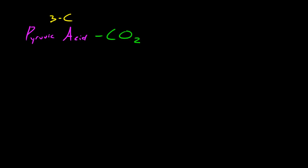Whenever that happens we end up with a two-carbon molecule, and this two-carbon molecule is called acetic acid. That's pretty much the first thing that happens to this pyruvic acid as soon as it enters the mitochondria.